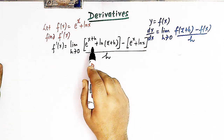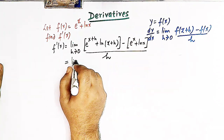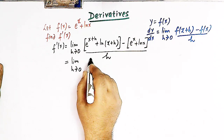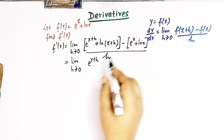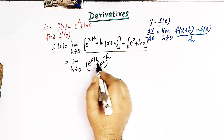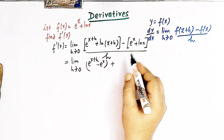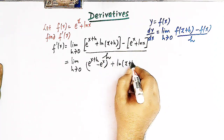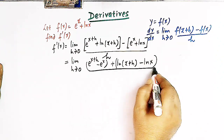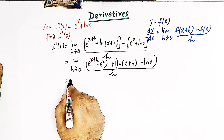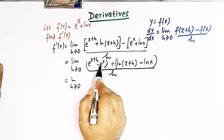Now let us rearrange and combine the terms in the numerator. We have limit h tends to 0, where we take e raised to x plus h and combine it with minus e raised to x, and then we combine the two log terms: log of x plus h minus log of x, all over h. Now we take e raised to x common from the first two terms.